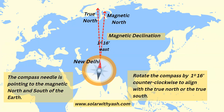Let us take another example. You are in New Delhi and you place your magnetic compass there. The magnetic declination of New Delhi is 1 degree 16 minutes east. Unlike New York where it was west, here it is east. So for east declination, rotate your compass counterclockwise by 1 degree 16 minutes. This will give you the true north-south line.